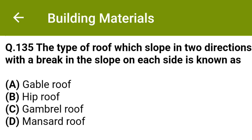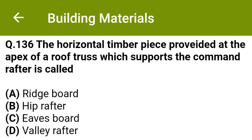The type of roof which slopes in two directions with a break in the slope on each side is known as: option A gable roof, option B hip roof, option C gambrel roof, option D mansard roof. The correct answer is option C, gambrel roof.